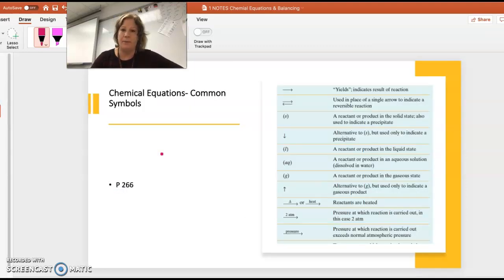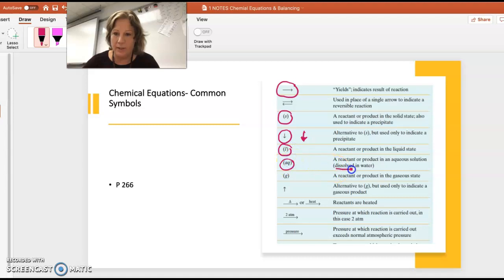These symbols are from your textbook. The arrow to the right means yields, makes, or produces. S is for solid. Sometimes we use a down arrow to show we formed a solid precipitate which falls to the bottom. L is for liquid, which is different than aqueous - aqueous means dissolved in water. Gas can use either G or the up arrow to show it bubbled away. Heat uses a triangle, and pressure is written above the arrow. Sometimes we use a catalyst like platinum written above the arrow.